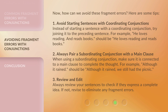2. Always pair a subordinating conjunction with a main clause. When using a subordinating conjunction, make sure it is connected to a main clause to complete the thought. For example, 'Although it rained' should be 'Although it rained, we still had the picnic.' 3. Review and edit. Always review your sentences to check if they express a complete idea. If not, revise to eliminate any fragment errors.